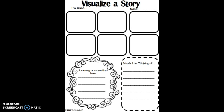Pause the video and fill this part in now. In the last section, it says 'words I am thinking of.' How do you think the character feels right now? What are some details in the setting that might help you understand the text? Draw any words down that come to your mind. The words might go with your pictures or they might go with your memory connection.